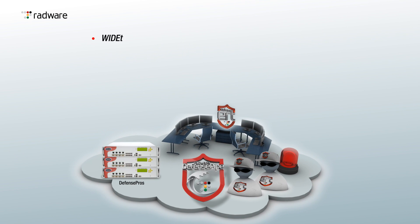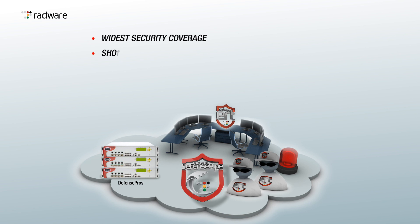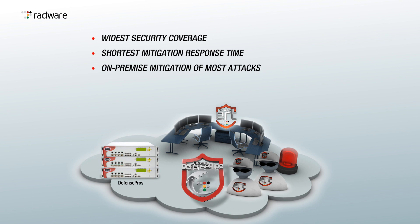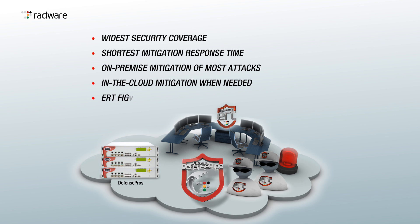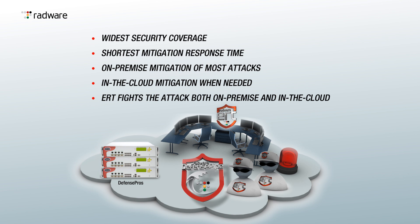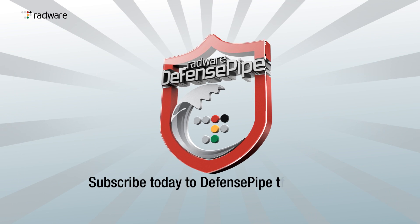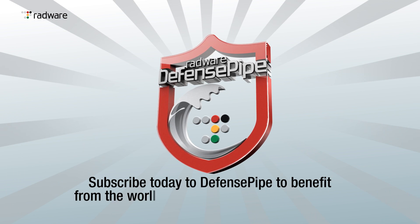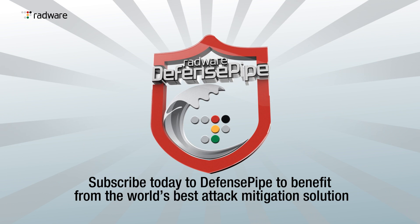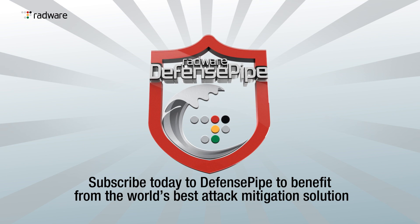The combination of on-premise attack mitigation system and Defense Pipe in the cloud provides widest security coverage, shortest mitigation response time, on-premise mitigation of most attacks, and in-cloud mitigation when needed. ERT fights the attack both on-premise and in the cloud. Subscribe today to Defense Pipe to benefit from the world's best attack mitigation solution.